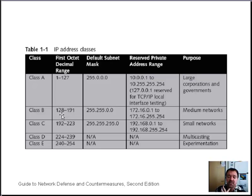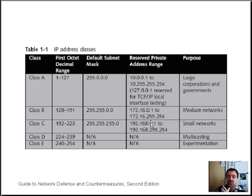Class B networks have a default subnet mask of 255.255.0.0 and cover a range of medium-sized networks. Even some of the larger corporations could be using several class B networks.